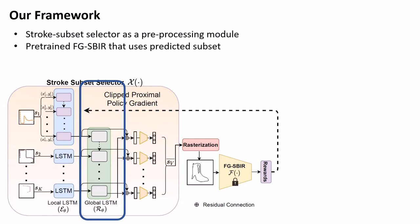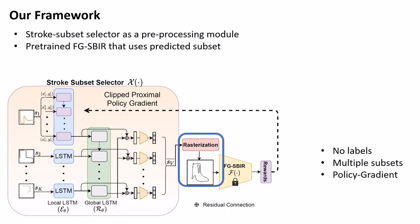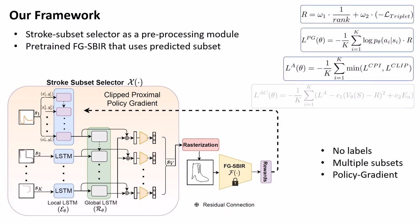Problem rises in the realization that there are no labels for the optimal subset, and that multiple subsets might lead to a successful retrieval. Hence, we use policy gradient from reinforcement learning literature to overcome the non-differentiability of the rasterization operation needed for subsequent retrieval. Subset stroke selector being a policy network takes an action of selecting a stroke and calculates a reward using pre-trained FGSBIR model as a critic.